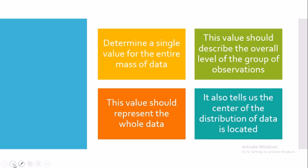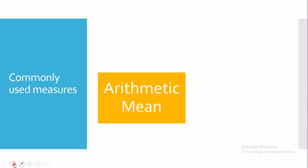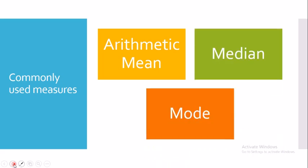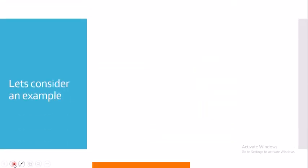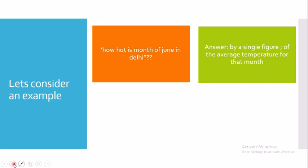The commonly used measures we will discuss today are arithmetic mean, median, and mode. There are other measures we will cover later. Consider the example: how hot is the month of June in Delhi? The answer is given by a single figure — the average temperature. For example, the average temperature for June was around 35 degrees, representing the whole month's observations with a single value.